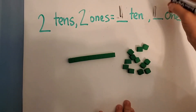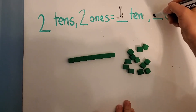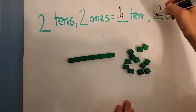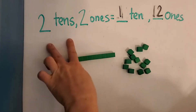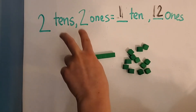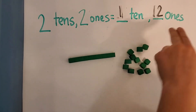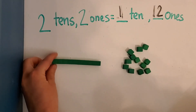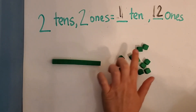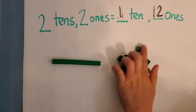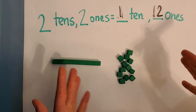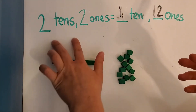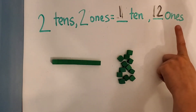So now we have twelve ones. So one ten and twelve ones. Two tens, two ones equals how much? Twenty-two, right. Now one ten, twelve ones — what does that equal? Well, we have ten, eleven, twelve, thirteen, fourteen, fifteen, sixteen, seventeen, eighteen, nineteen, twenty, twenty-one, twenty-two. So they are equal. Two tens and two ones is equal to one ten and twelve ones.